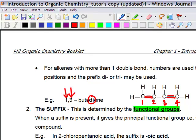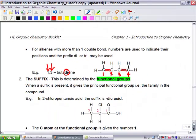The suffix is determined by the functional group. When the suffix is present, it gives the principal functional group, that is the family name in the compound. For example, in 2-chloropentanoic acid, the suffix is -oic acid.